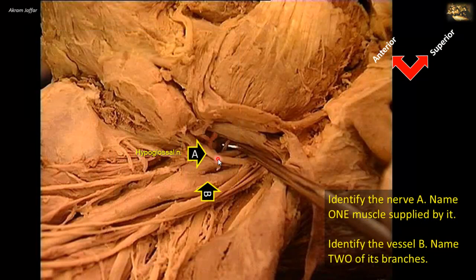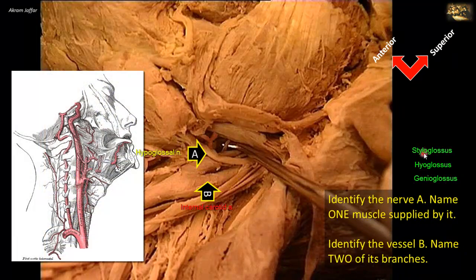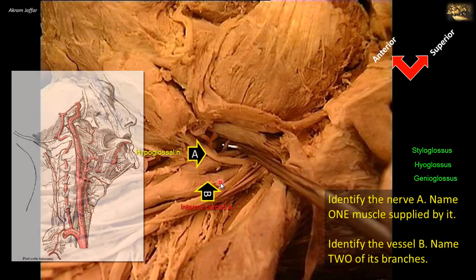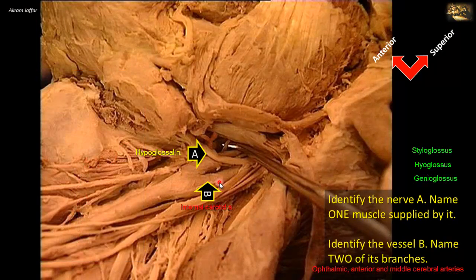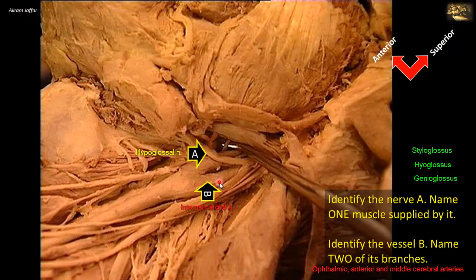The muscles supplied by the hypoglossal nerve include the genioglossus, hyoglossus, styloglossus, and all intrinsic muscles of the tongue. Vessel B is the internal carotid artery, which has no branches in the neck. It passes through the carotid canal and gives branches inside the cranial cavity — including the ophthalmic artery — then divides into the anterior and middle cerebral arteries that supply the brain. It is one of the two main sources of blood supply to the brain, together with the vertebral artery.